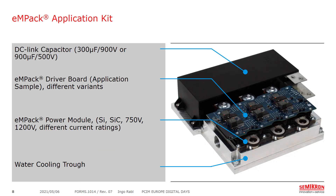Let me explain the MPEG application kit, which you can see in this photo. From top to bottom, you can see the DC-Link capacitor, available either in 900V and 300μF or in 500V and 900μF. The blue part is the application sample — the MPEG driver board — in different variants. Below the driver board is the MPEG power module, available in silicon, silicon carbide, 750V or 1200V, and in different current ratings. And below the module, you can see the water cooling trowel.